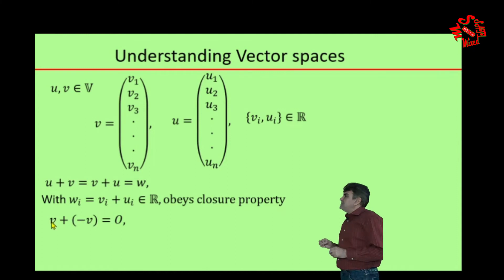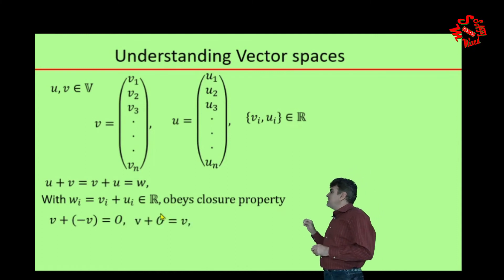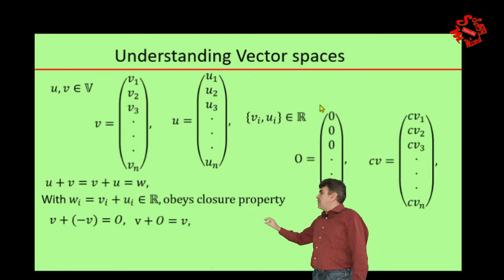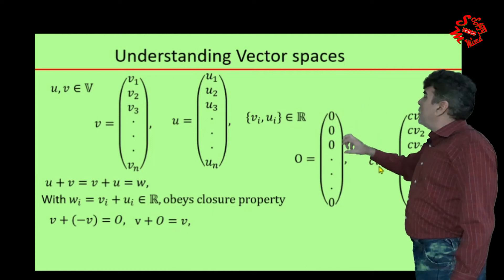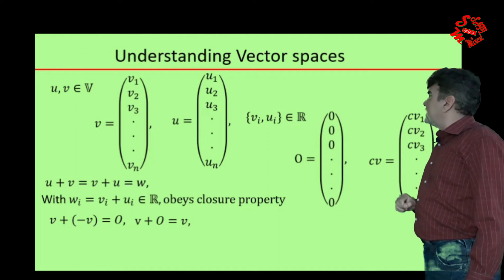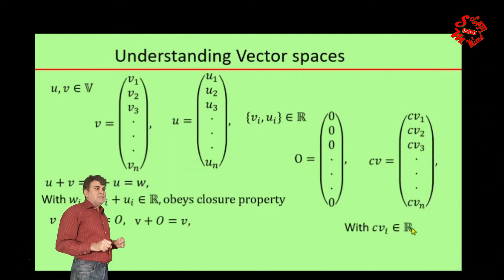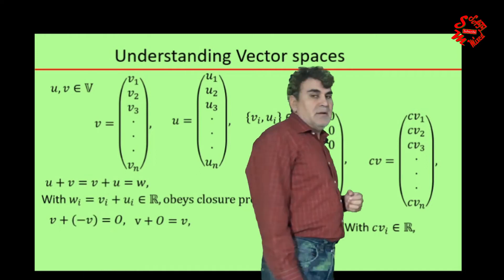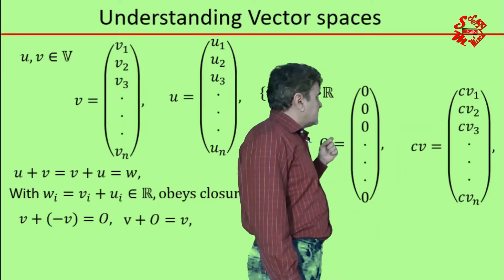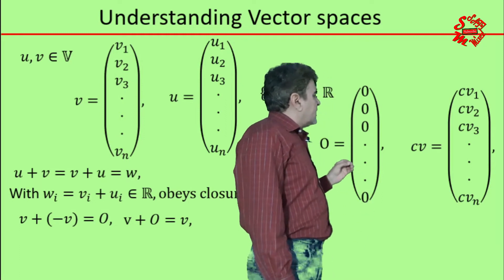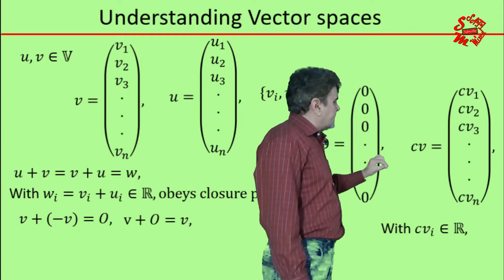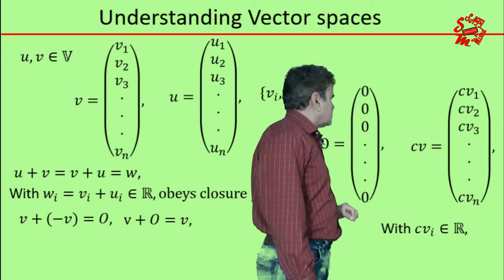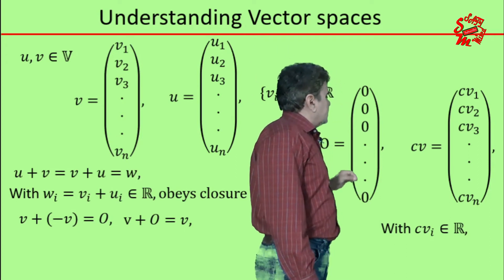Similarly, if we multiply each element of v with a minus sign, constructing a minus v column matrix, and then add it to v like v plus (minus v), that will always give us 0, where 0 is an n-row column matrix with all entries equal to 0. And if I add 0 to v, then I get back the same matrix. On the other hand, if c is a number that belongs to the set of real numbers R, and if I multiply that with v, then every element of v will be multiplied with c, and I get another column matrix with entries equal to c times vi belonging to R, which again is an element of vector space V.